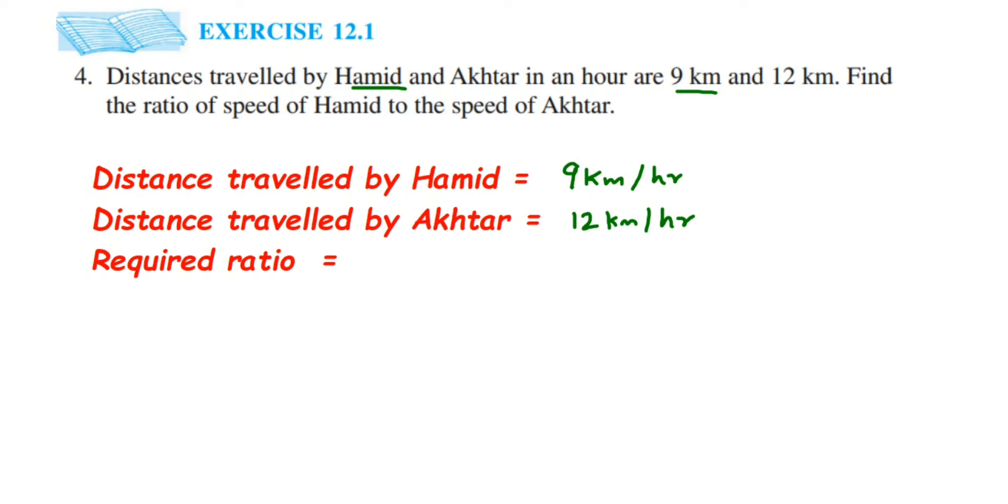So how to find the ratio? Since they are asking for Hamid is to Akhtar, first is Hamid and next is Akhtar, right? Speed of Hamid to speed of Akhtar. So required ratio will become 9 km—but I'm not going to write that, I'll just write 9 by 12 or 9 is to 12.